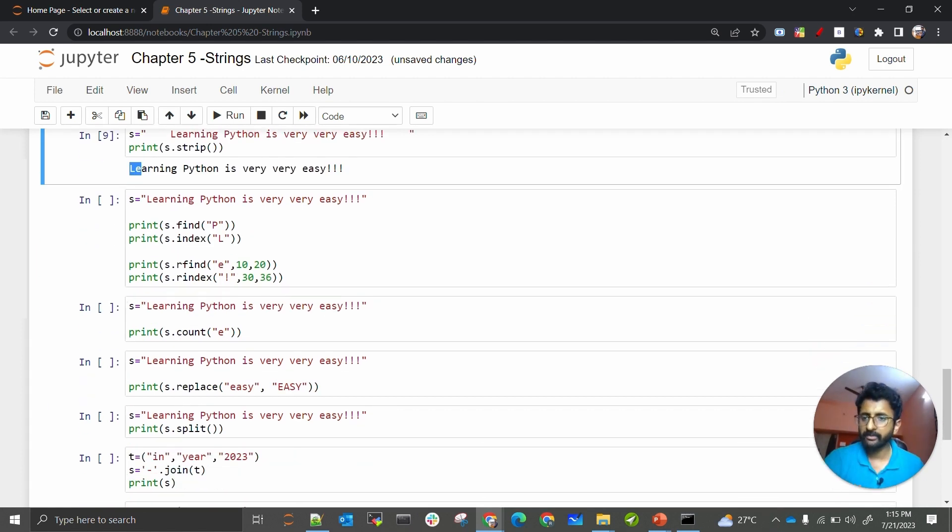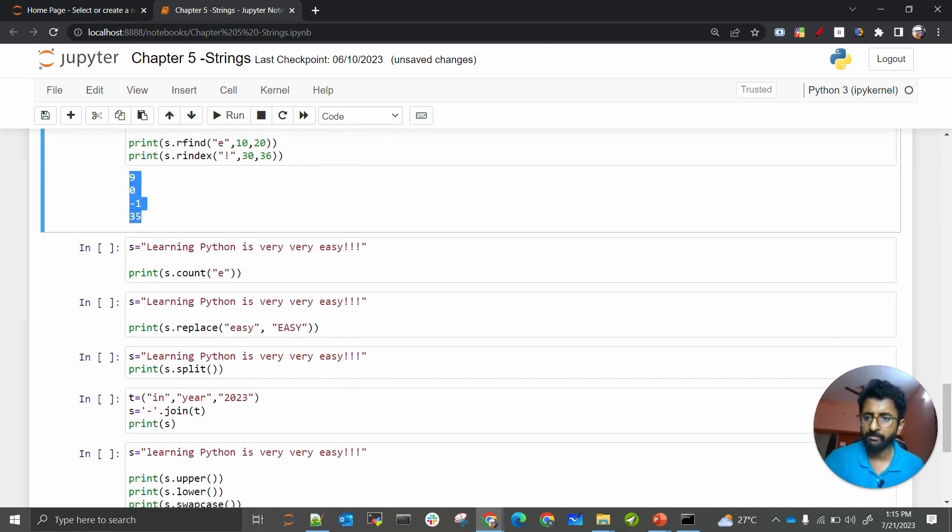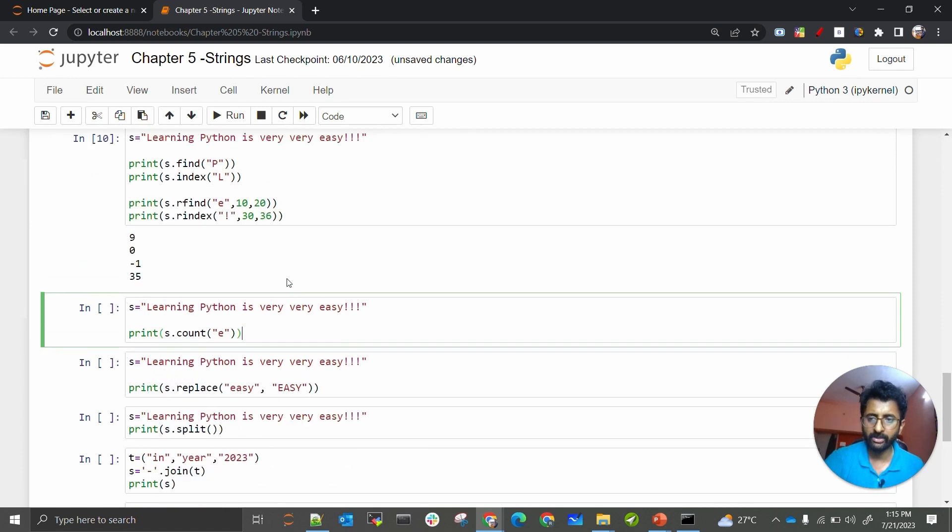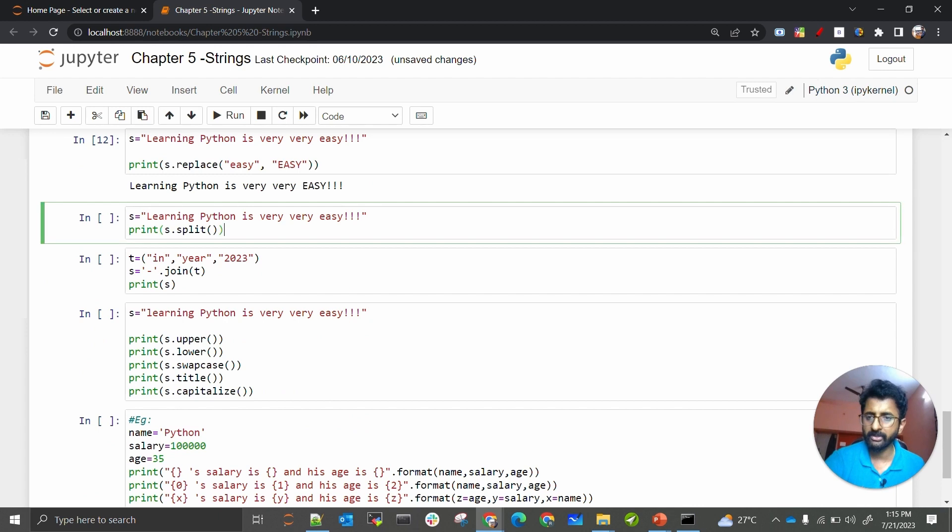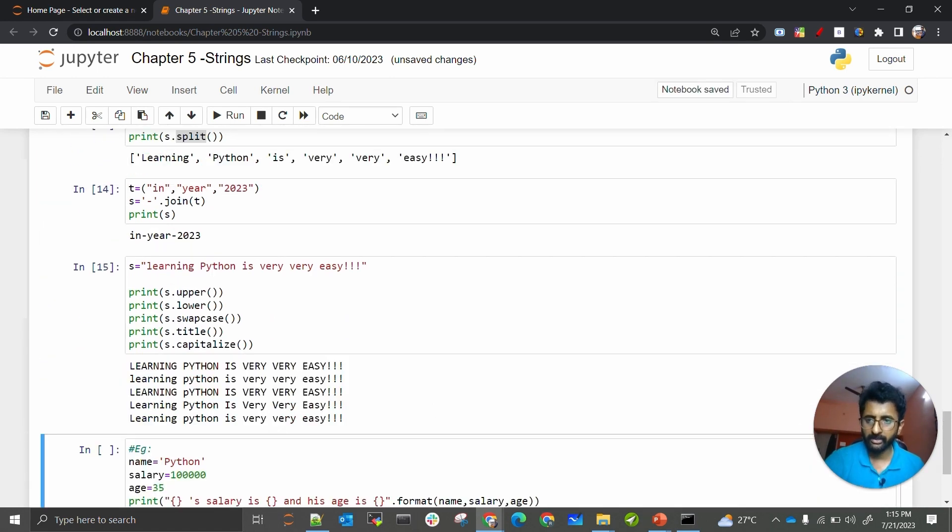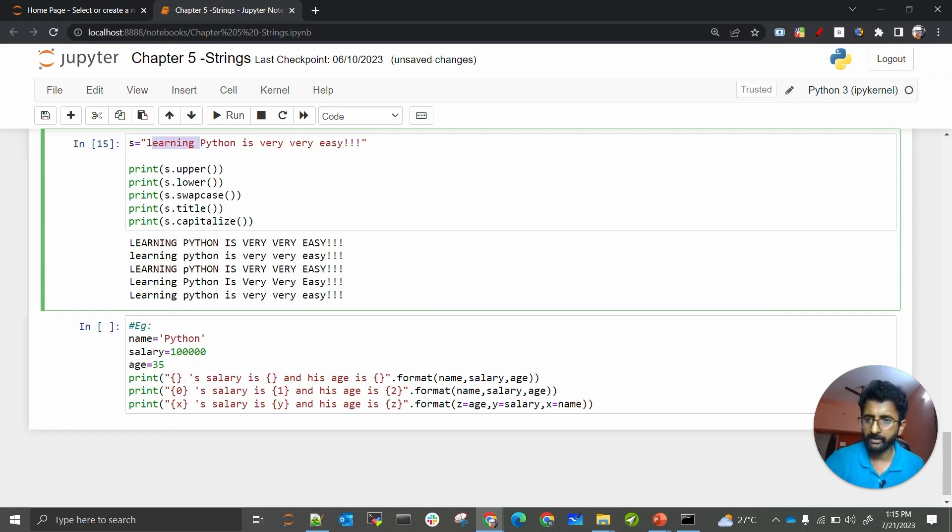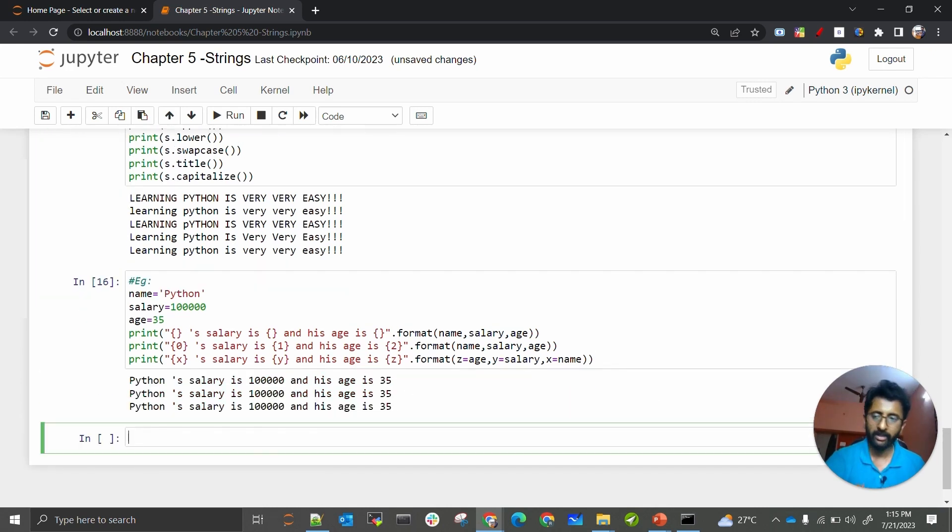We are removing the spaces at the front by doing strip operations, so all those spaces are removed. Then we are finding p and l index inside the strings. I am counting the s dot count e operations. Similarly, I am replacing easy with easy. All these functions and examples we have seen, I am doing it one by one in jupyter notebook. I can split it and convert it to the list, I can join it, I can convert it to lower, upper, title, and capitalize case. And also last is I am formatting the strings.